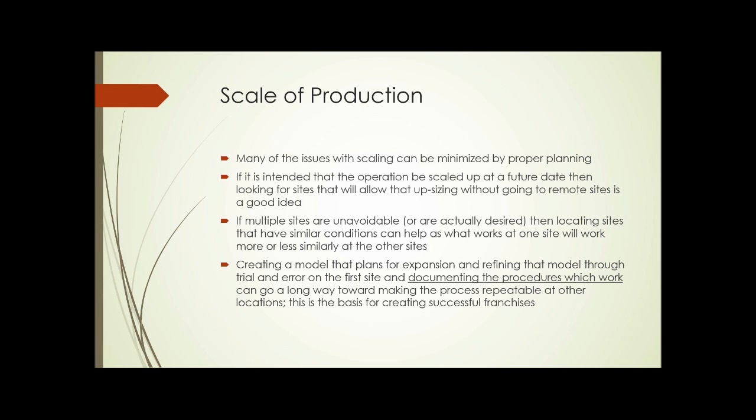If multiple sites are unavoidable or even actually desired — which can be the case — then locating sites that have similar growing conditions, as we discussed, can help. Because what works at one site is going to work more or less similarly at the other sites. If one site is full sun with excellent soil and your second site is partially shaded with poor soil, what works at the first site isn't necessarily going to work at the second. If you can find sites that are similar, it's easier to transplant your operation from one area to another.